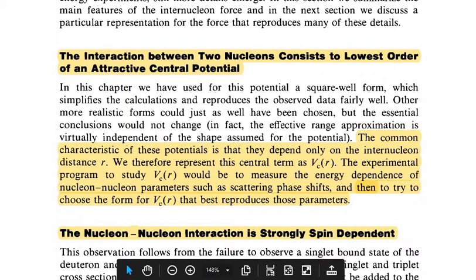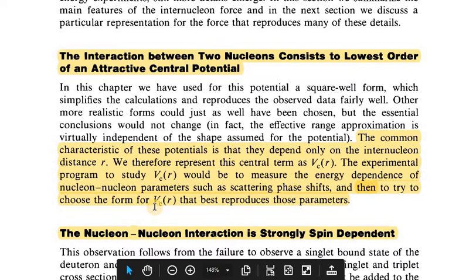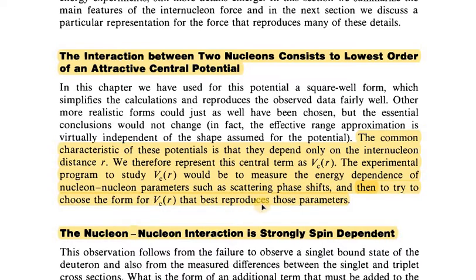The common characteristics of these potentials is that they depend only on the internuclear distance R. We therefore represent the central term as V_C(r). The experimental program to study V_C(r) would be to measure the energy dependence of nuclear-nuclear parameters such as scattering phase shift, and then try to choose the form for V_C(r) that best reproduces those parameters.